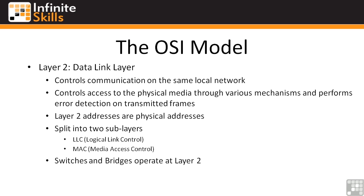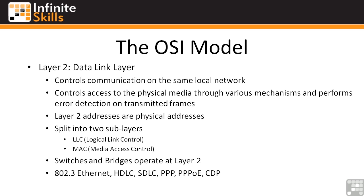Switches and bridges operate at layer two. Unlike hubs, which are dumb repeaters at layer one, switches and bridges actually look at the MAC addresses in Ethernet frames and will only send a packet out the one port connected to the destination MAC address. The protocols you'll see at layer two include 802.3 Ethernet, HDLC, SDLC, PPP, PPPoE for wide area networking, and CDP — the Cisco Discovery Protocol. CDP can be your best friend when troubleshooting network connectivity, as it tells you what's connected on what ports in your router or switch.